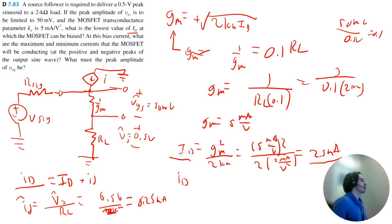So therefore, the maximum will be the DC, 2.5, plus the amplitude of our AC, 0.25, to get 2.75 milliamps. And then our minimum drain current will be the DC minus the amplitude of the AC to get 2.25 milliamps.